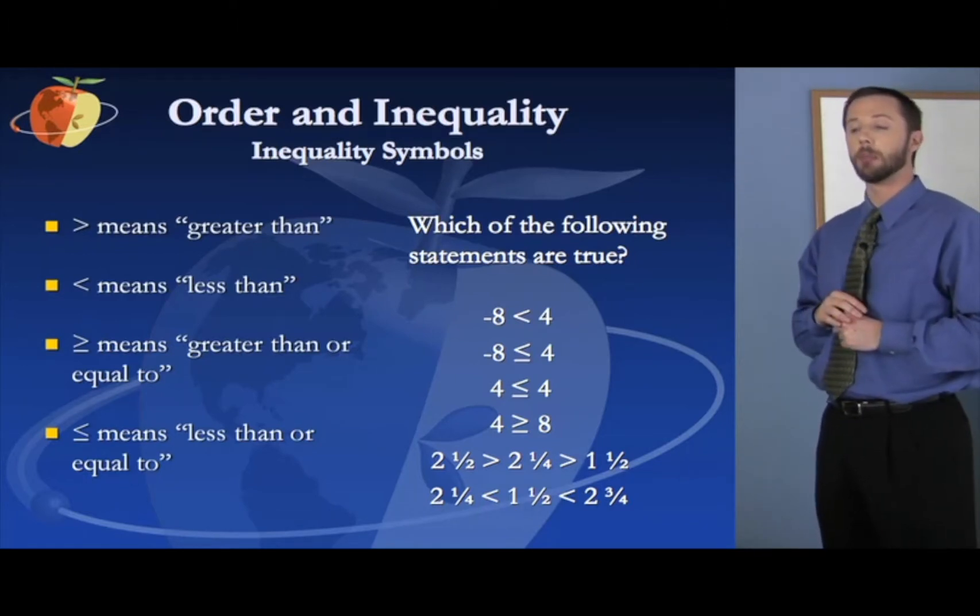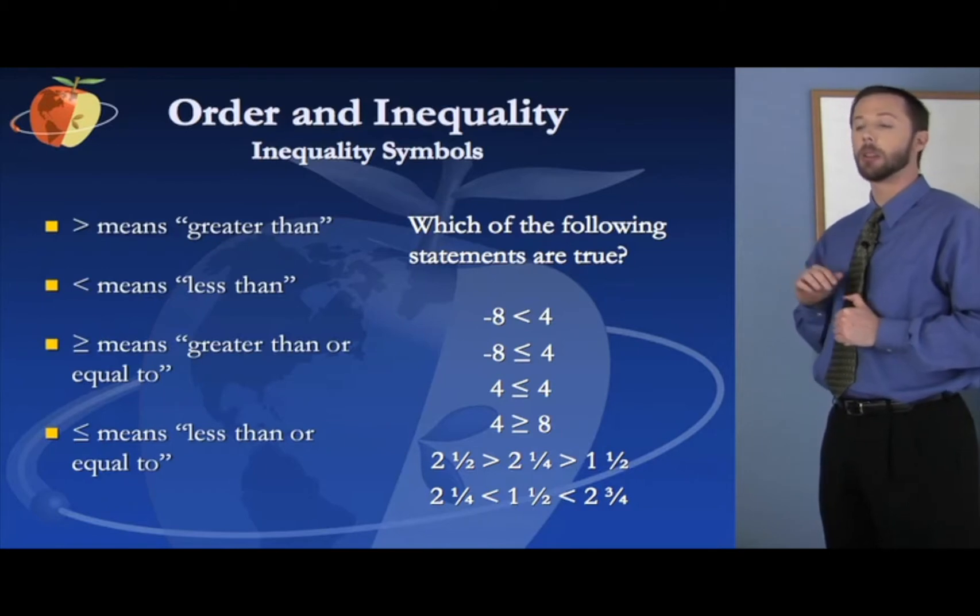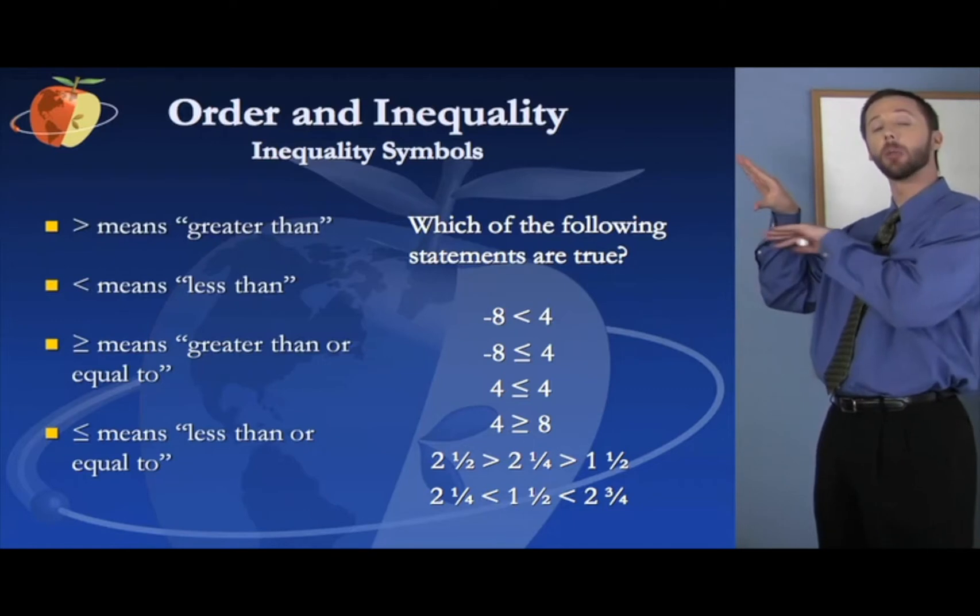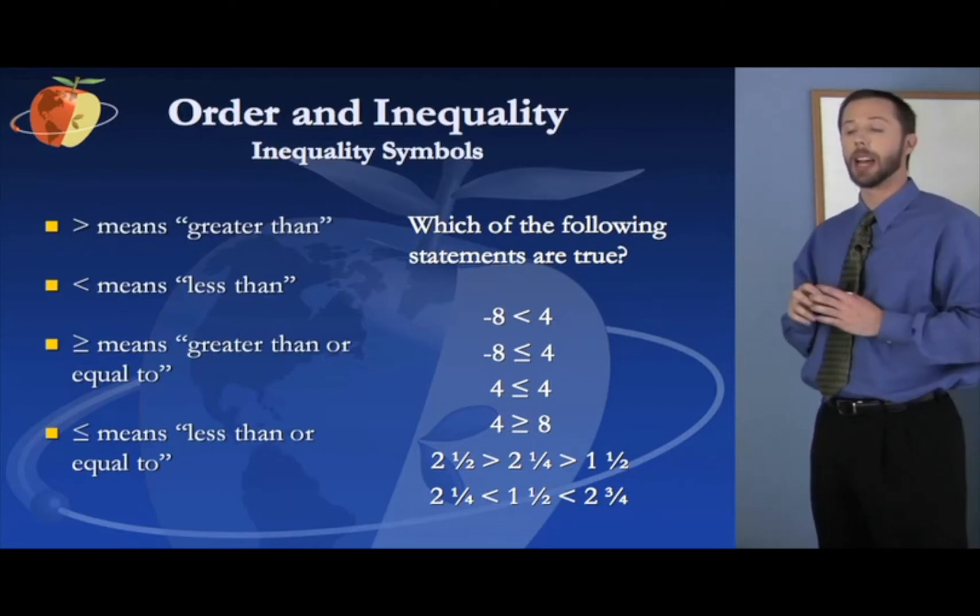The second symbol you see means less than. The third symbol means greater than or equal to. You see that it's got that symbol but it has the equal to underneath it. And the last symbol there means less than or equal to.